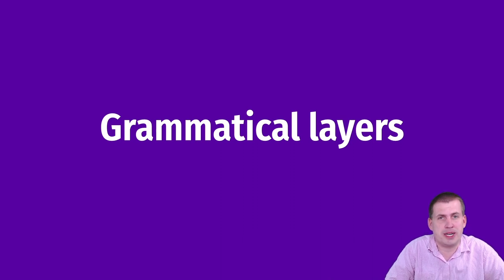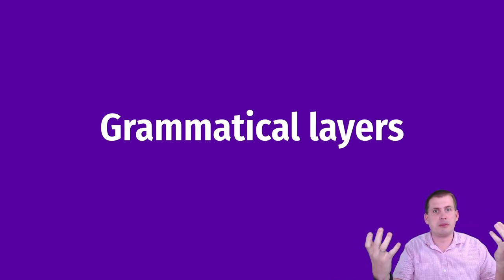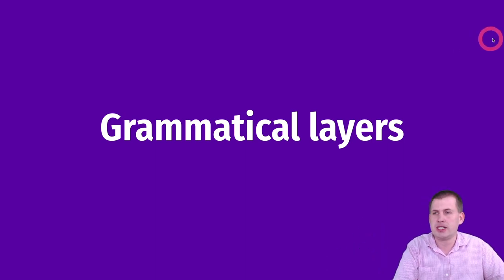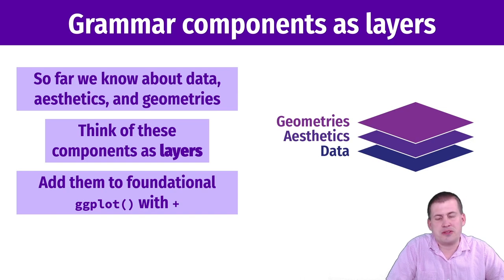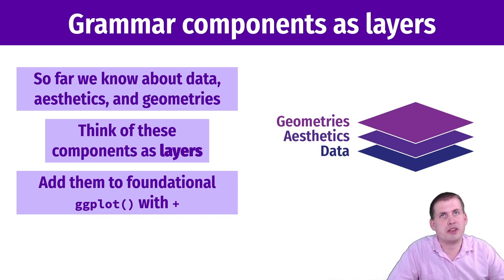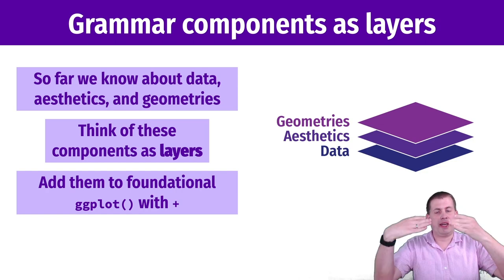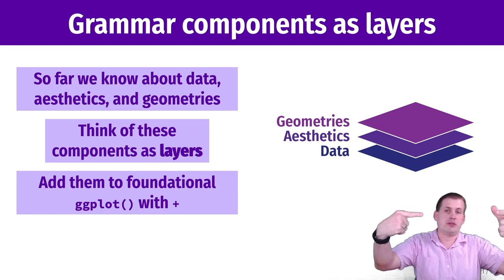Next, we're going to talk a little bit more about the grammar and how we can use layers of grammatical elements to create more complicated plots, keep changing plots, and add more information. So far, we've talked about three different types of components of the grammar of graphics: data, aesthetics, and geometries. One way of thinking about this is as layers, where we take a data set, add aesthetics onto it, and then add geometries onto it.